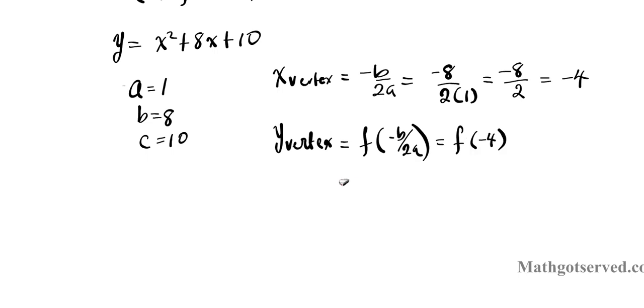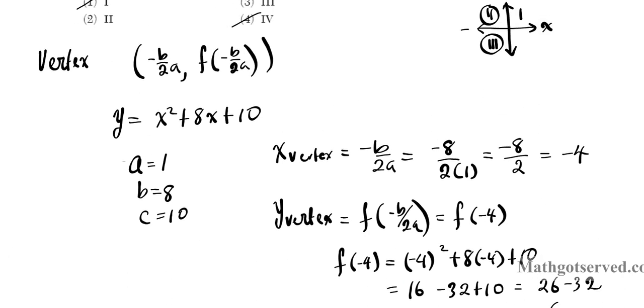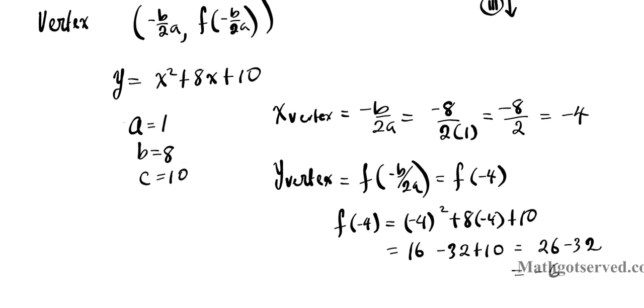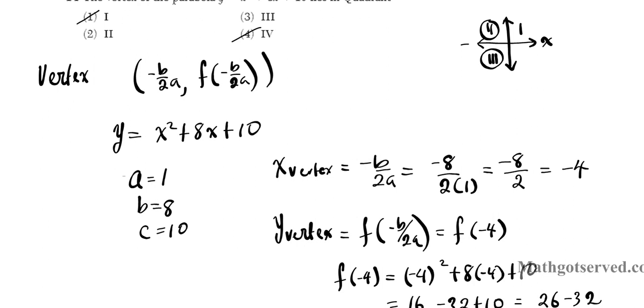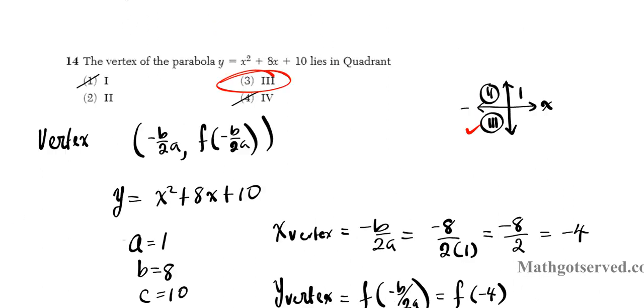Since we already know what negative b over 2a is, f of negative b over 2a is going to be f of negative 4. So let's plug that into the function. f of negative 4 equals negative 4 squared plus 8 times negative 4 plus 10. Negative 4 squared is 16 minus 32 plus 10. Let's add the positive numbers first. 26 minus 32 is negative 6. So we see that y is negative also. So which quadrant will the x and y both be negative? That's going to be quadrant number 3. So my answer is option 3 for number 14.